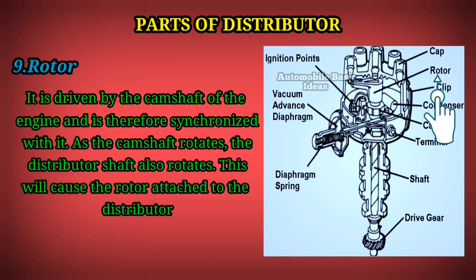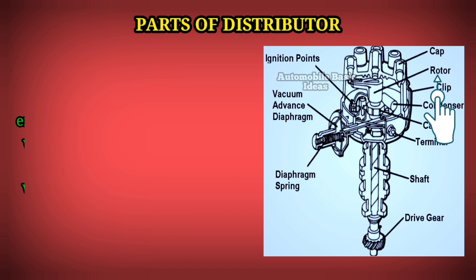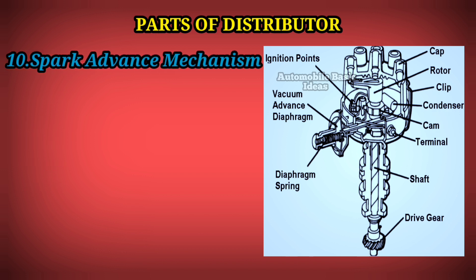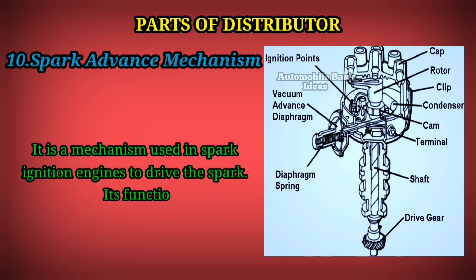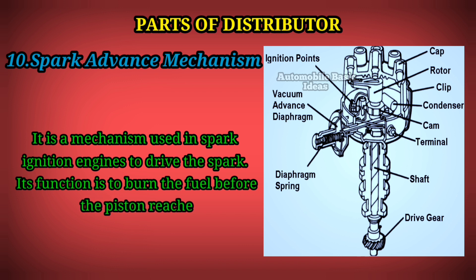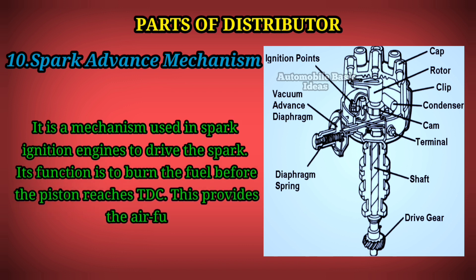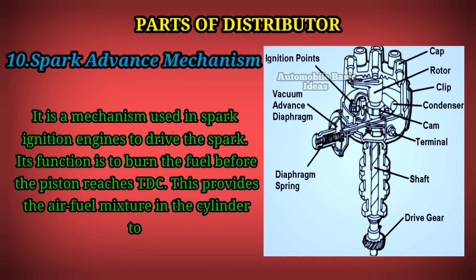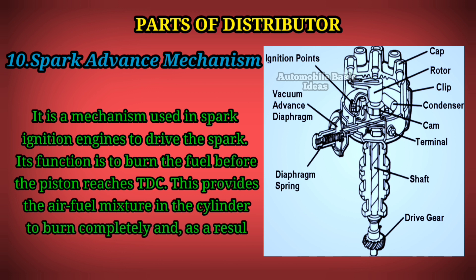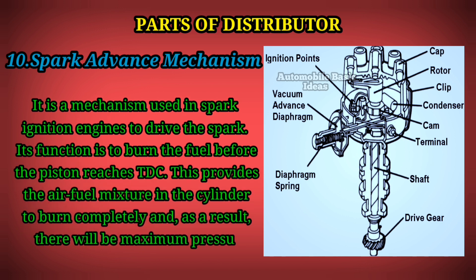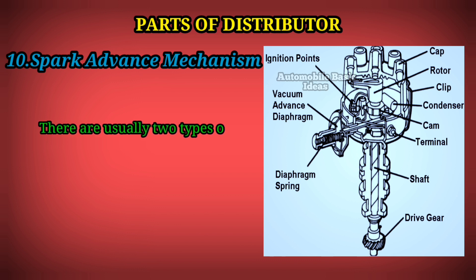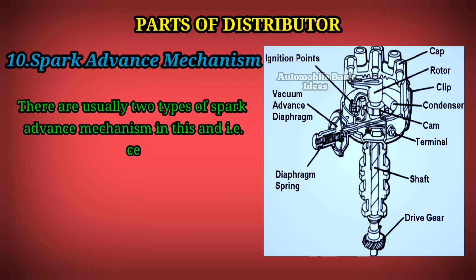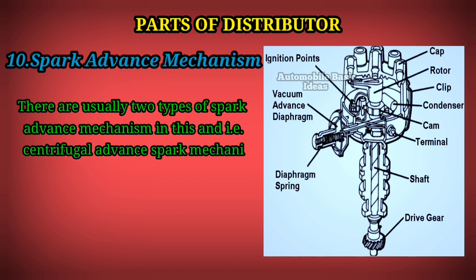10. Spark Advance Mechanism: It is a mechanism used in spark ignition engines to advance the spark. Its function is to burn the fuel before the piston reaches TDC, allowing the air-fuel mixture in the cylinder to burn completely, resulting in maximum pressure on the piston. There are usually two types: the centrifugal advance spark mechanism and the vacuum spark advance mechanism.